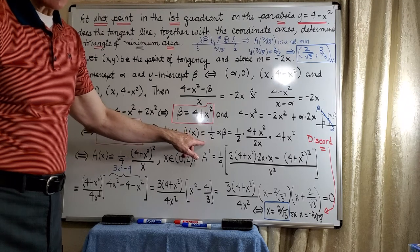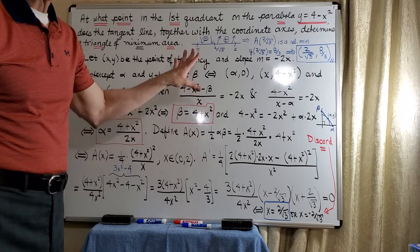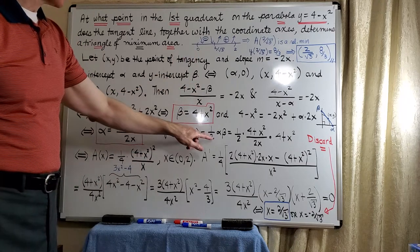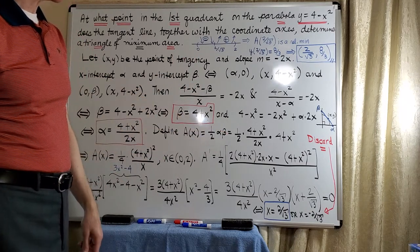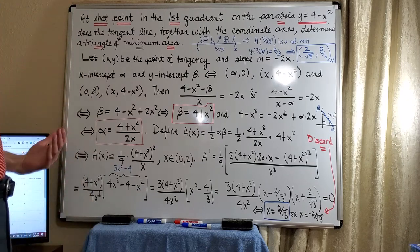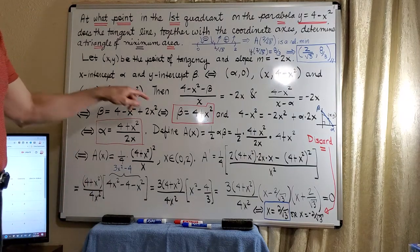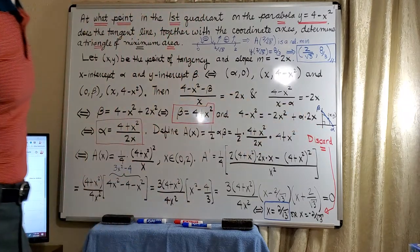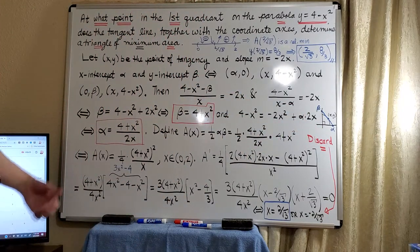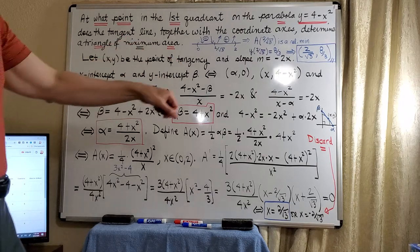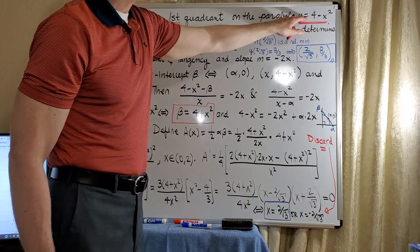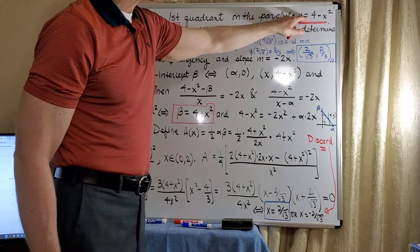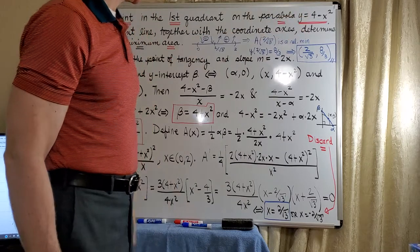We know what we need, but we have to do a little work before that to arrive at a formula that will allow us to solve the problem. So what we're going to do is write our x-intercept as alpha and our y-intercept as beta. And clearly, the tangent line can be given by the derivative here, the slope of the tangent line that is, and that'll be -2x.